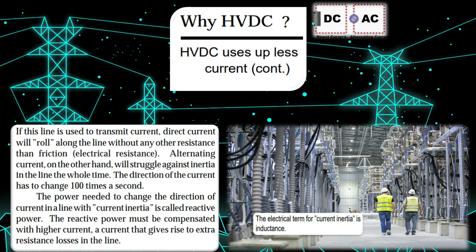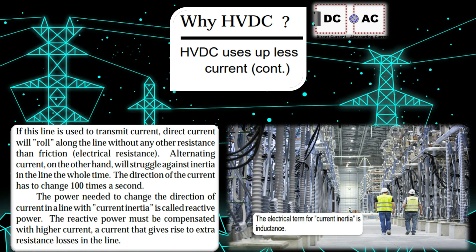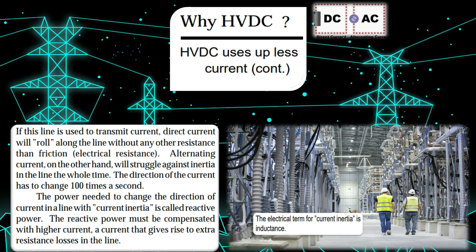HVDC lines have lower losses and installation costs. With the demand for connection of remote power generation, HVDC lines provide a lower CAPEX solution compared to HVAC lines.